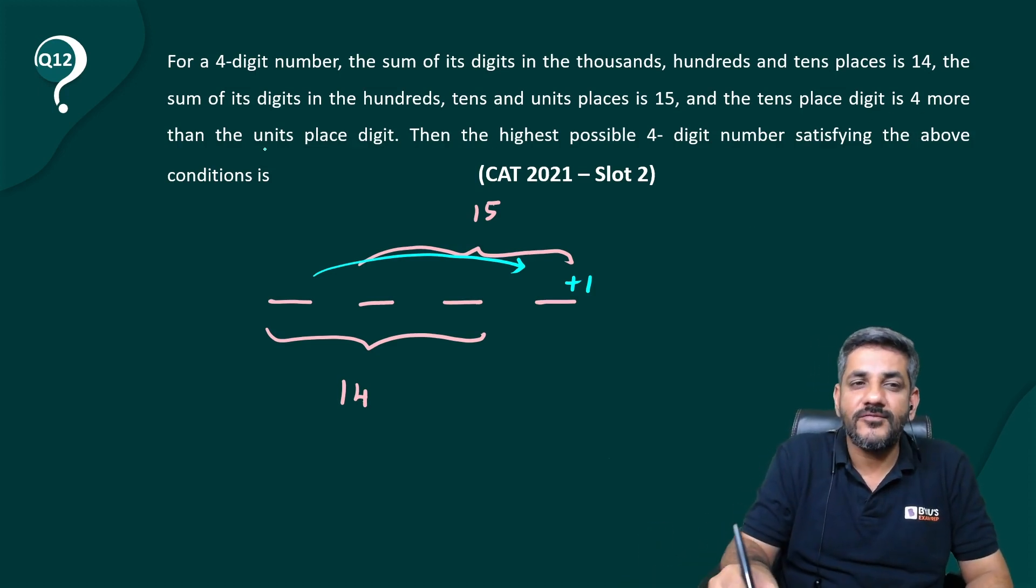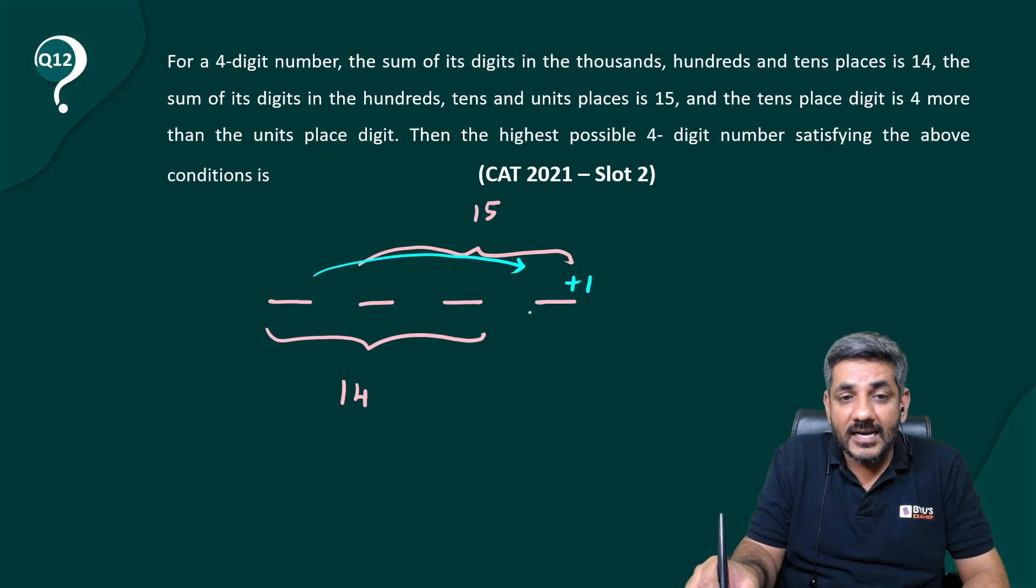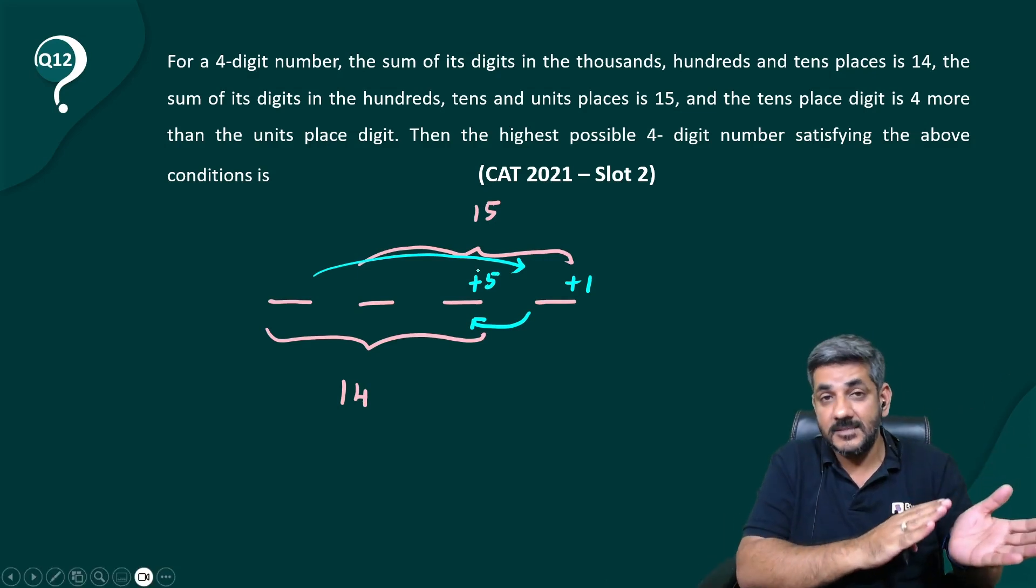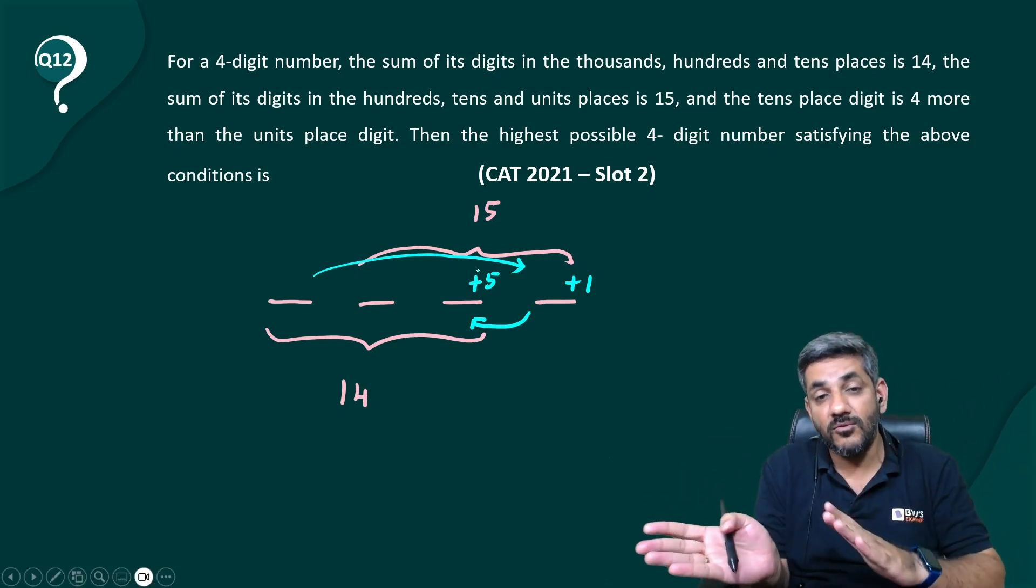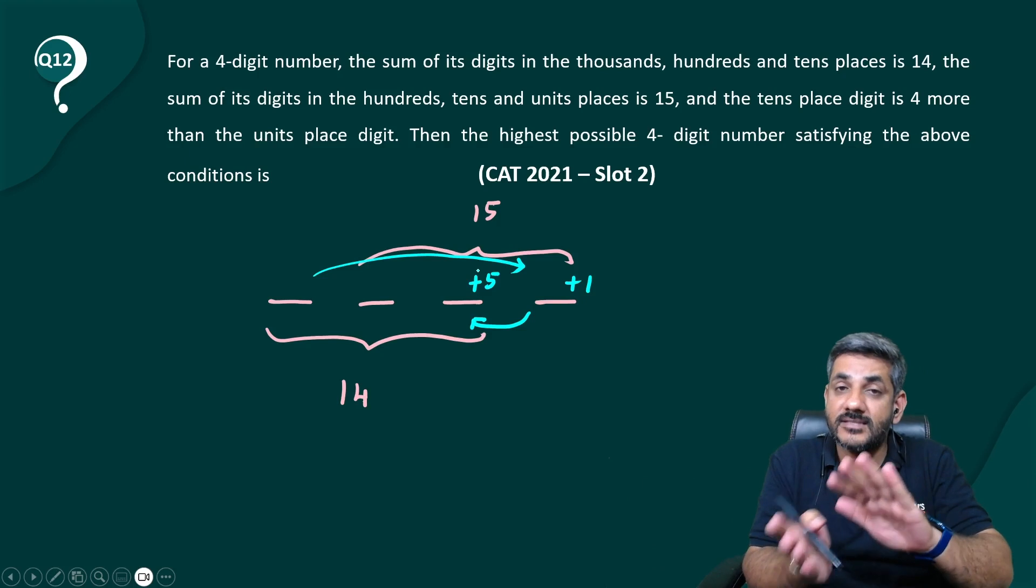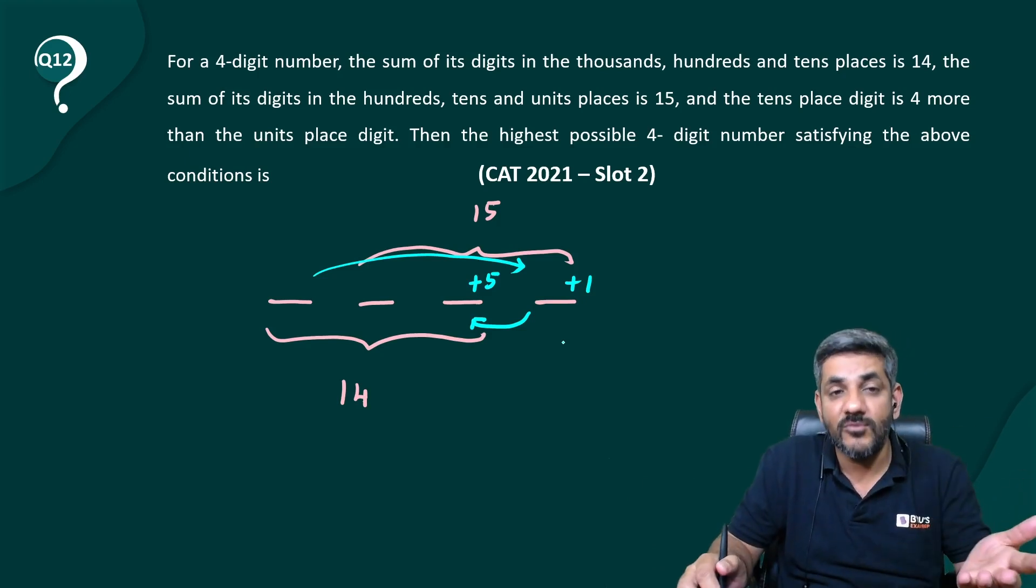And the tens place digit is four more than the units place. And this digit is another four more than that. So, can I say this digit is five more than the first digit? Last digit is one more than the first. And the tens place is another four more than that. So, it is five more than that.